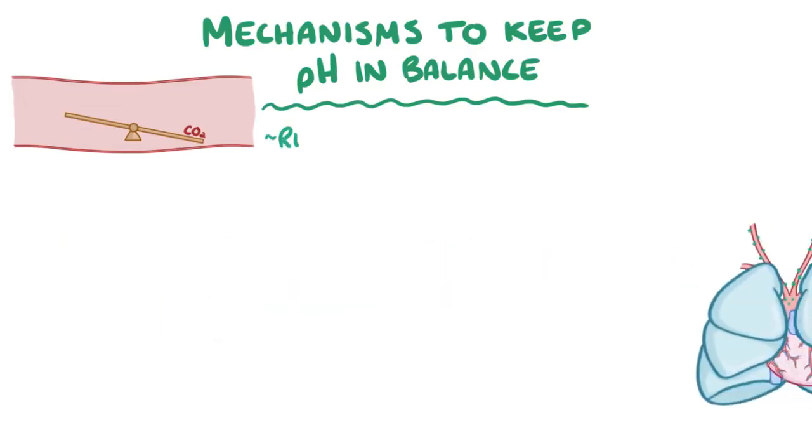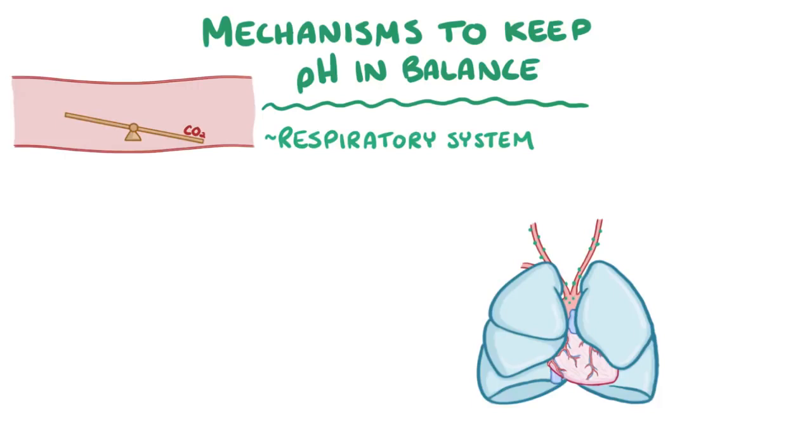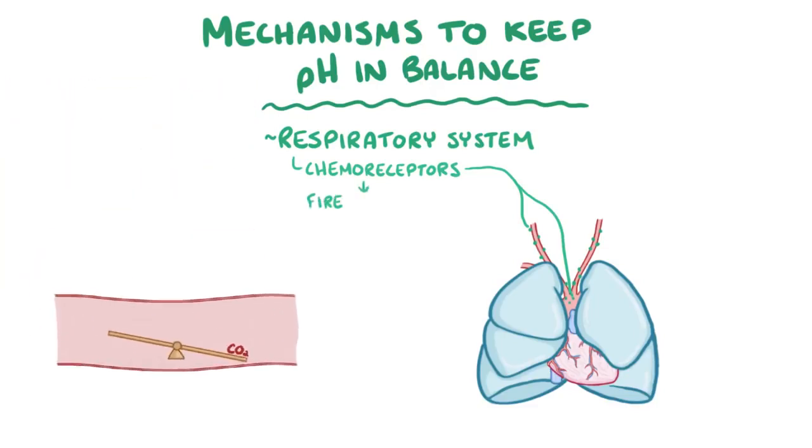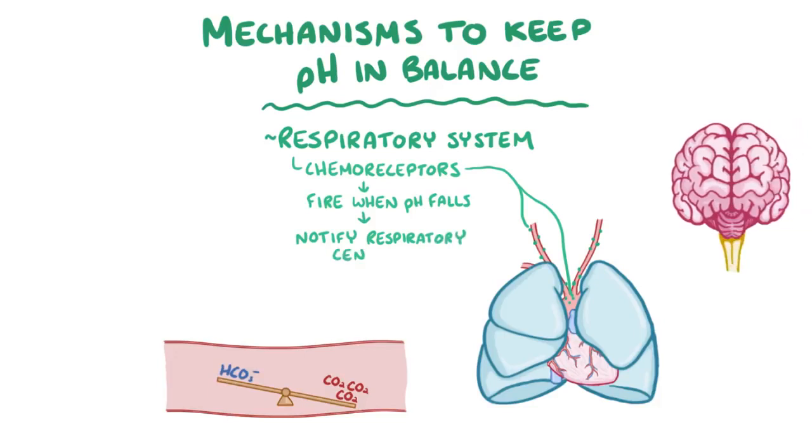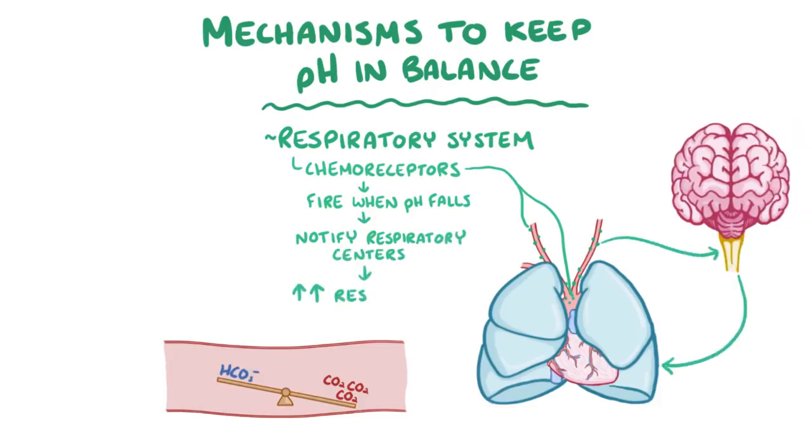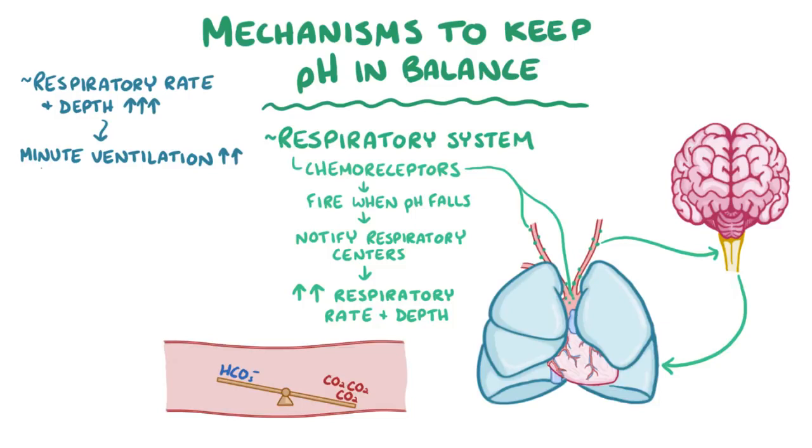Another important regulatory mechanism involves the respiratory system, and starts with chemoreceptors that are located in the walls of the carotid arteries and in the wall of the aortic arch. These chemoreceptors start to fire when the pH falls, and that notifies the respiratory centers in the brainstem that they need to increase the respiratory rate and depth of breathing. As the respiratory rate and depth of each breath increases, the minute ventilation increases, which is the volume of air that moves in and out of the lungs in a minute. The increased ventilation helps more carbon dioxide move out of the body, which reduces the partial pressure of carbon dioxide in the body, which increases the pH.